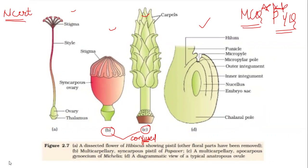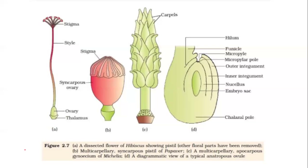Look at the first diagram. Diagram A is the dissected part of a hibiscus flower showing the pistil, from which all other floral parts have been removed. This is the stigma, the long filament is the style, then you have the ovary. The ovary is attached to the thalamus.